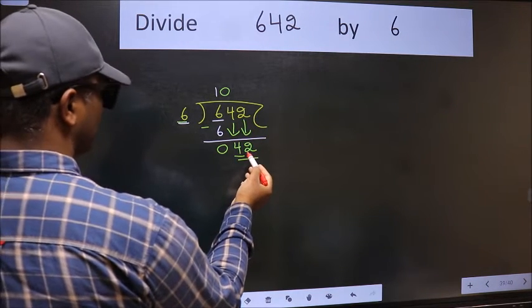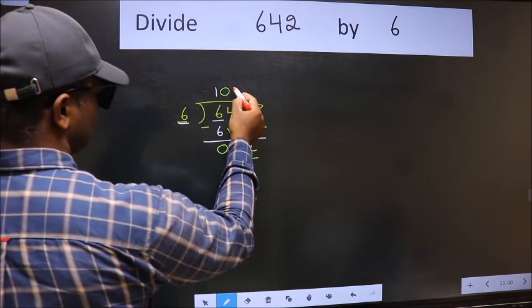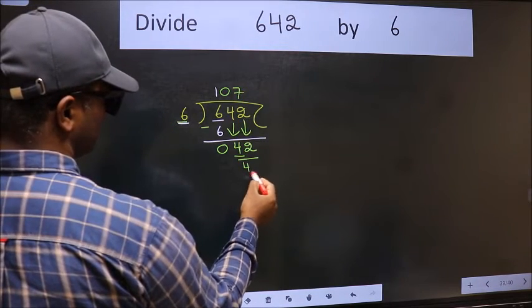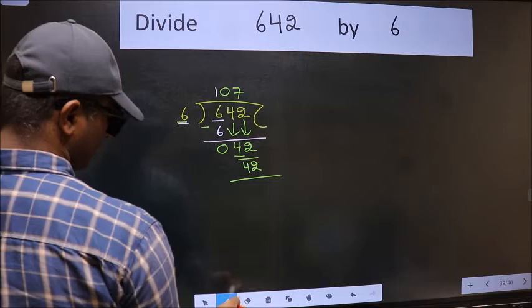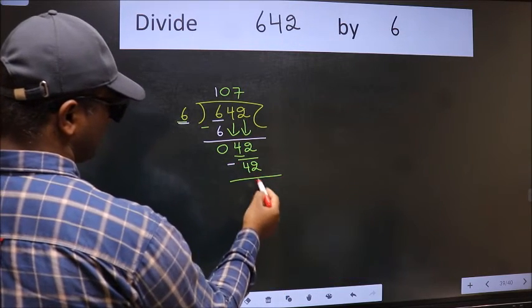Now 42. When do we get 42 in the 6 table? 6 sevens, 42. Now we should subtract. We get 0.